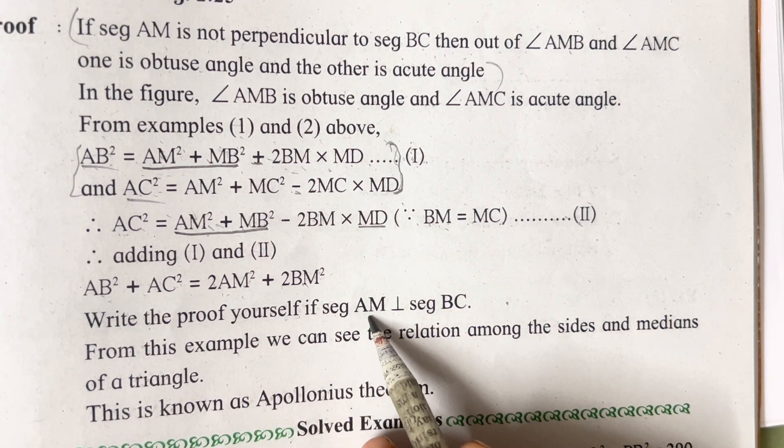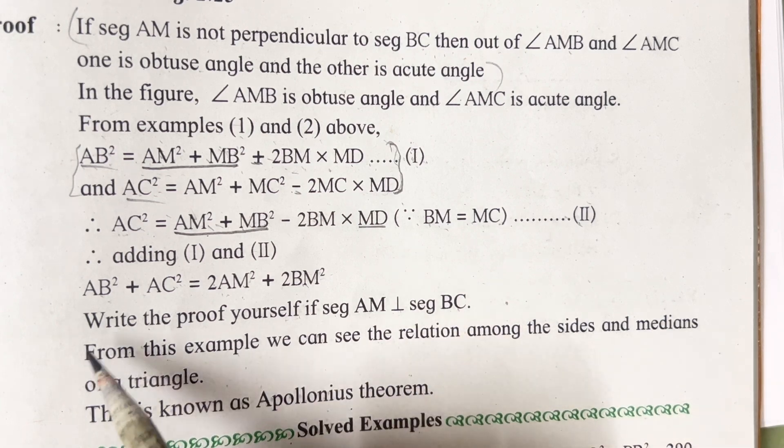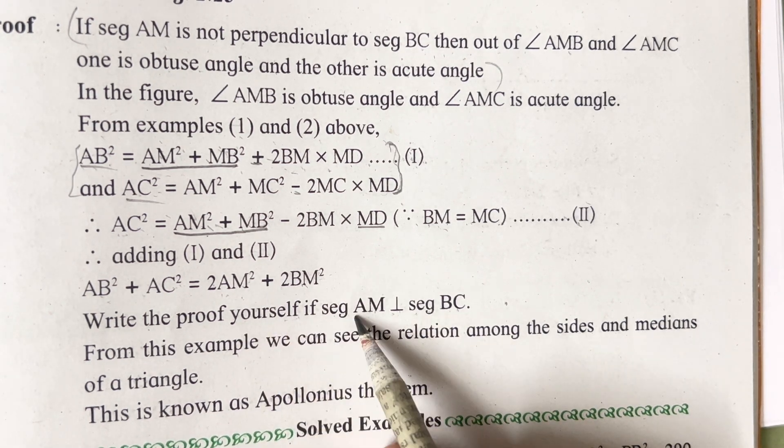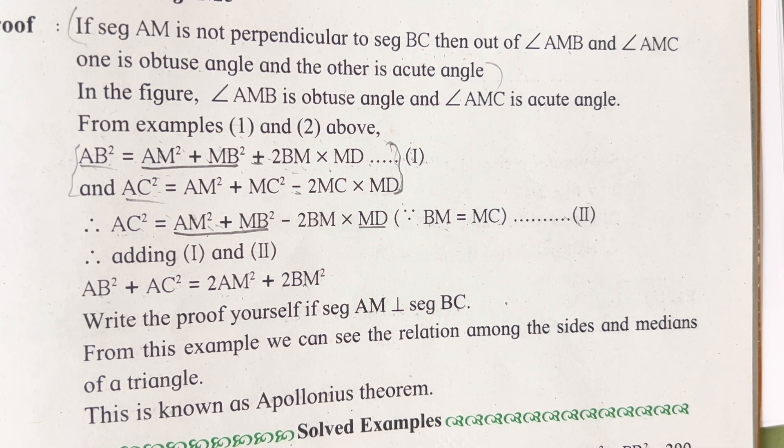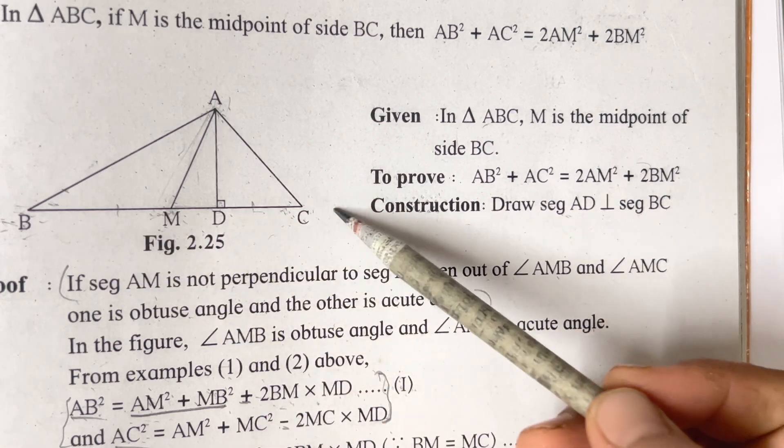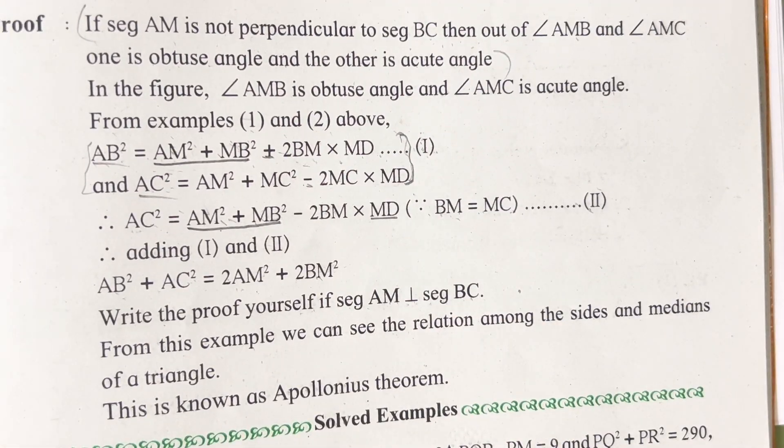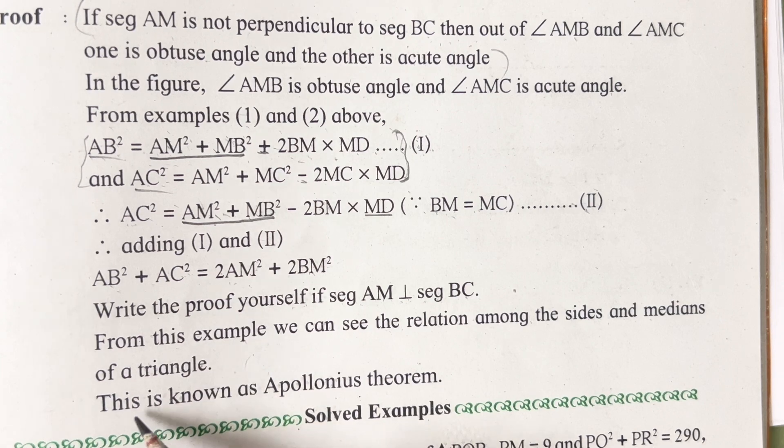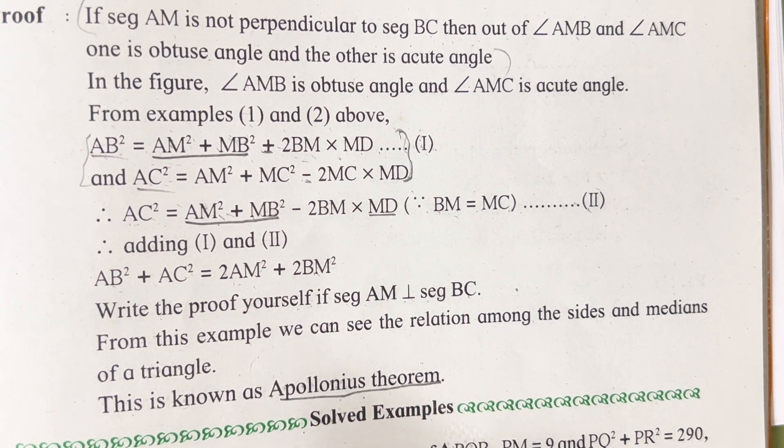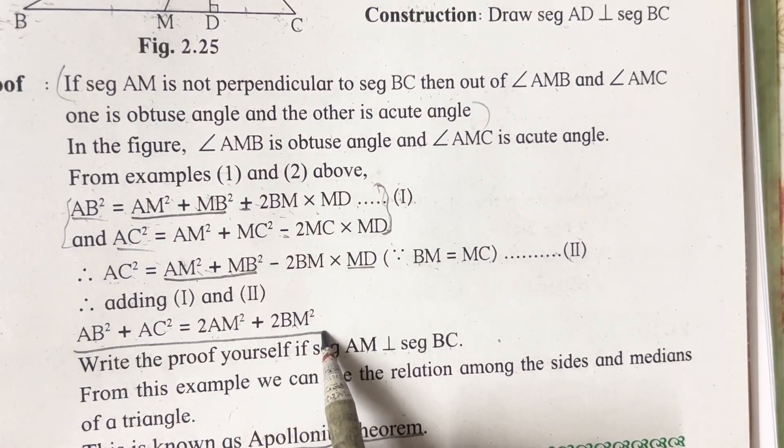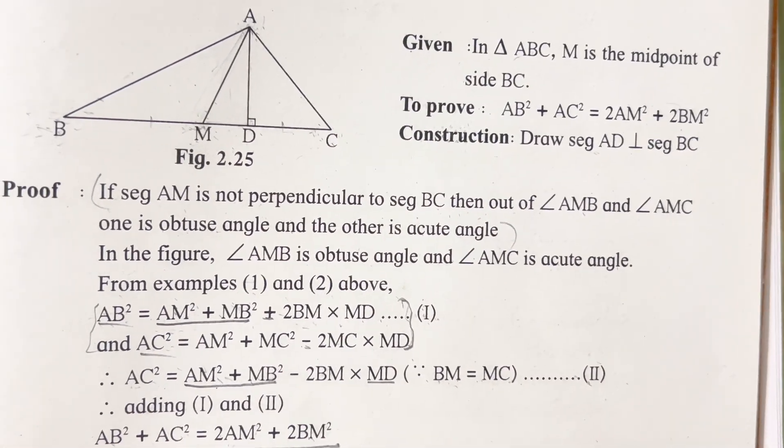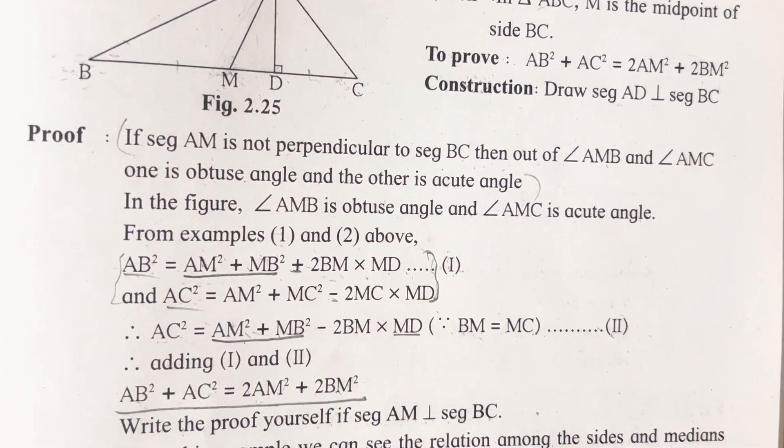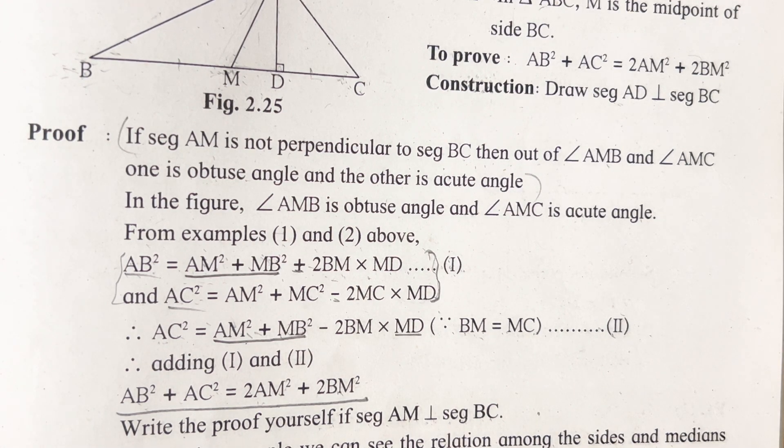Write the proof yourself if segment AM is perpendicular to segment BC. Now they have given over here that you have to prove and write it on your own. Or directly you can write segment AM is perpendicular to segment BC. From this example, we can see the relation among the sides and the medians of a triangle. This is known as Apollonius theorem. I hope this theorem is clear to everyone. While solving, if you are finding anything difficult or anything which is not clear, do let me know in the comment section. See you in the next video. Till then, take care. Bye!